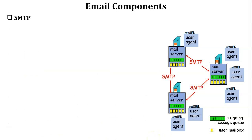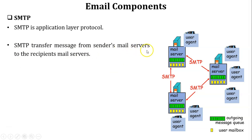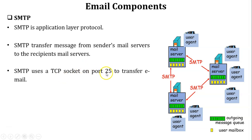The next email component is SMTP — Simple Mail Transfer Protocol. SMTP is an application layer protocol whose purpose is to transfer messages from the sender's mail server to the recipient's mail server. SMTP exchanges mail from one mail server to another. SMTP uses a TCP connection to transfer email between mail servers, and that TCP connection is established on port number 25 in each mail server.